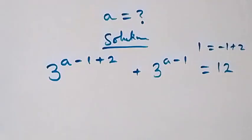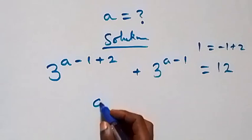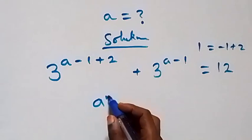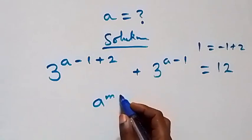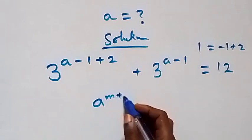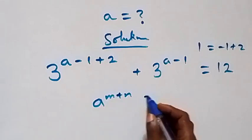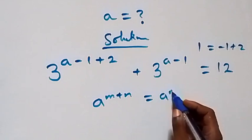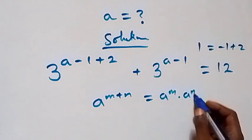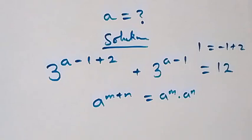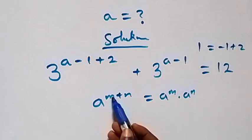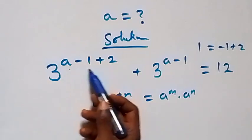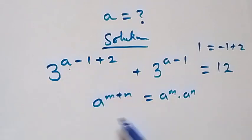Then, from the law of indices, when we have a raised to power m plus n, this equals a raised to power m times a raised to power n. Here, let's treat m as a minus 1, then n as 2.